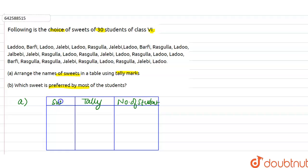So firstly we will talk about Laddu. How many students like Laddu? One, two, three, then four, five, six, seven, eight, nine, ten, eleven.